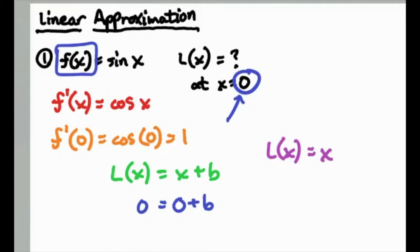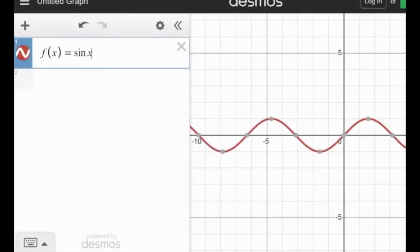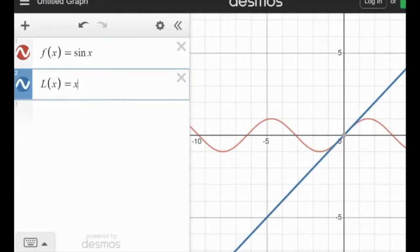Okay, this means that around 0, the sine function could be approximated using the l of x is equal to x, so y equals x. Now to kind of make this get cemented a little bit more, let me show you what this looks like as a graph. So we have the function sine x.